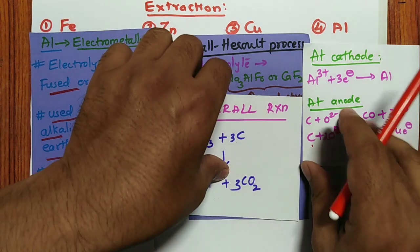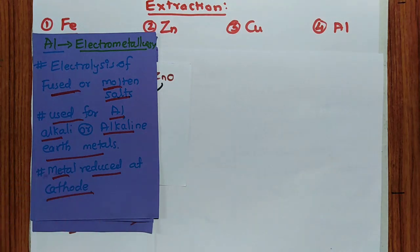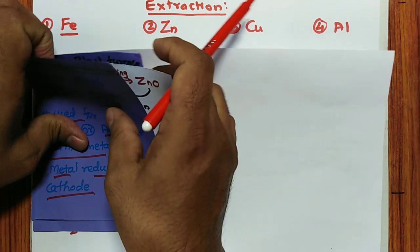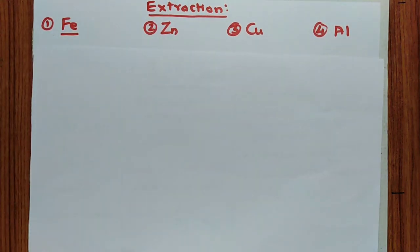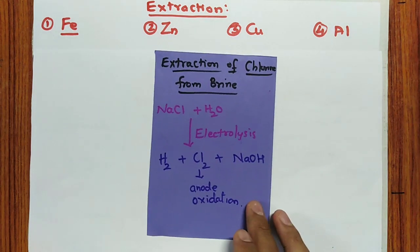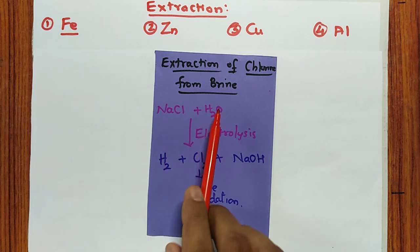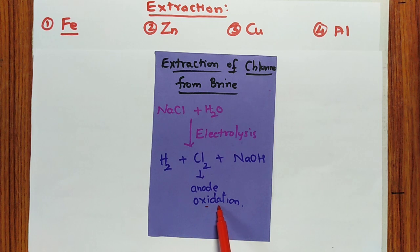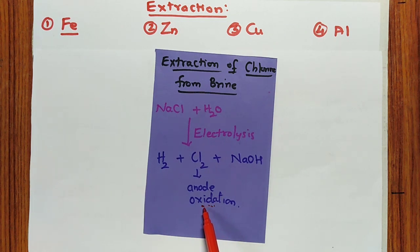Extraction of chlorine from brine solution: NaCl solution is electrolyzed to give H₂, Cl₂, and NaOH. Cl₂ is produced at the anode — oxidation takes place at the anode, so Cl⁻ anion moves towards the anode and Cl₂ gas is evolved.